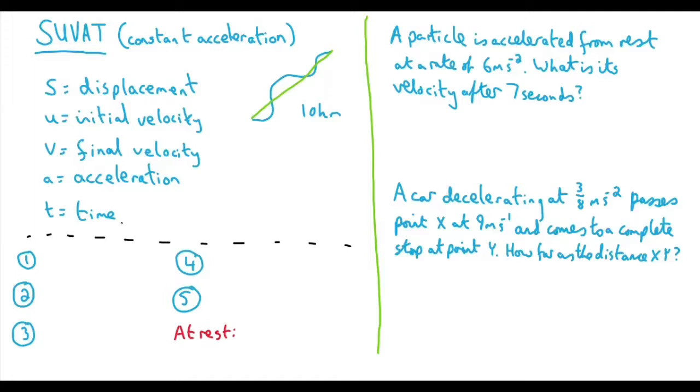So when you look at these questions, you are going to find that you probably have three of these variables and you're looking for a fourth. If you can find three you know and one you're after, you can then plug these into an appropriate equation. There are five equations that we can think of to use for SUVAT. The first is V equals U plus AT. So if you had your initial velocity, final velocity, acceleration and maybe you wanted time, you could plug that into this equation and rearrange and solve.